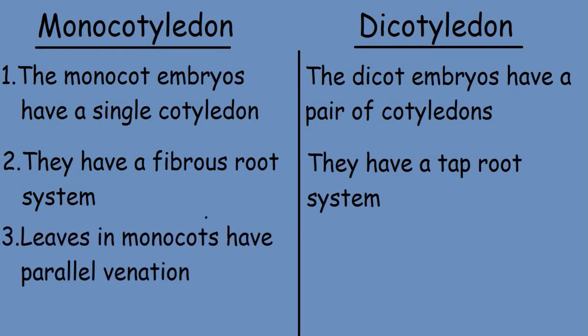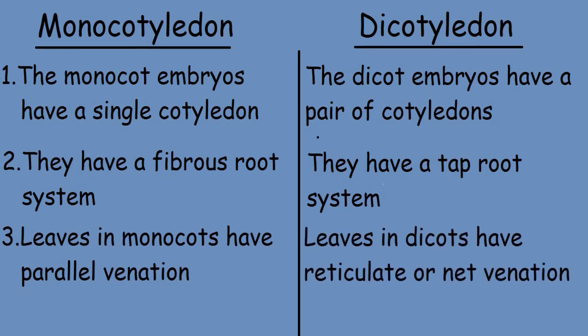The leaves in monocots have a parallel venation, while the leaves in dicots have reticulate or net venation.